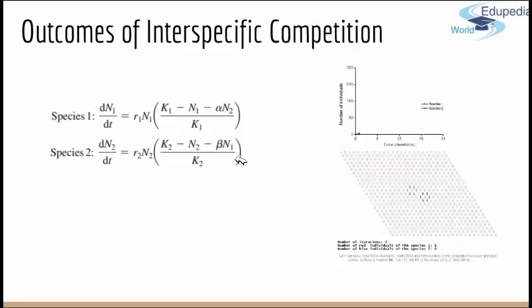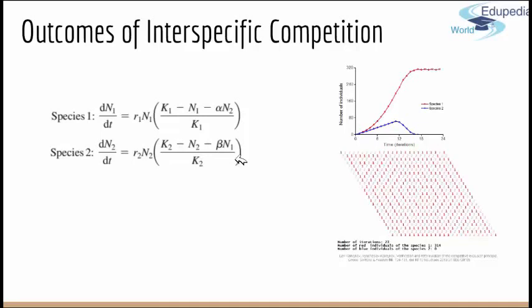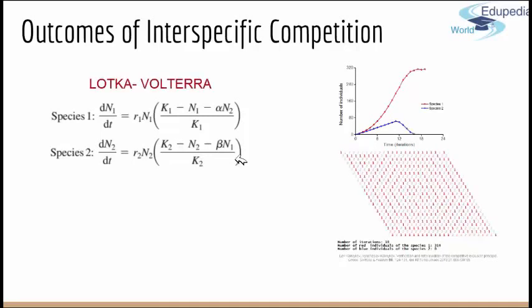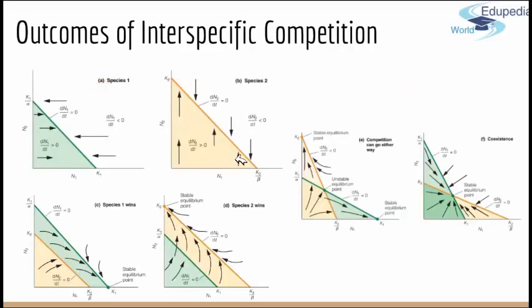Depending on the combination of values for the carrying capacity and for alpha and beta, the Lotka-Volterra equation predicts four different outcomes that are possible to happen.